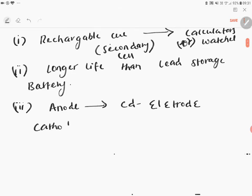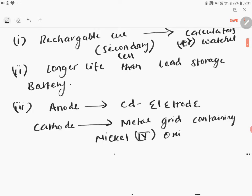Cathode is a metal grid containing nickel four oxide, NiO₂.